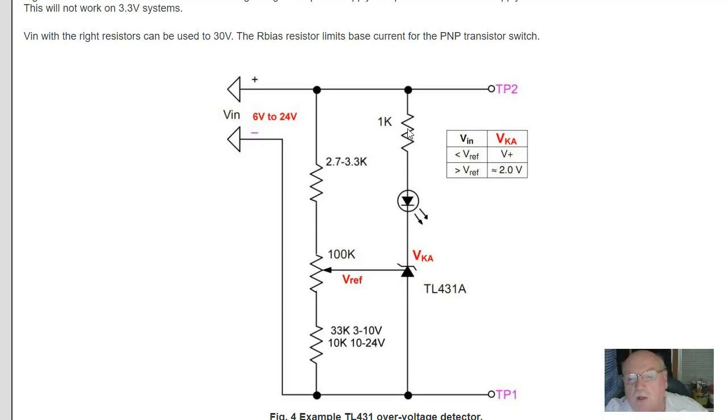Very simple circuit, but it has a shortcoming known as if you're having a VIN of 4, 5, 6 volts, the LED tends to be dim. I don't care for this circuit.